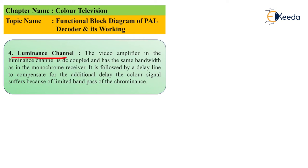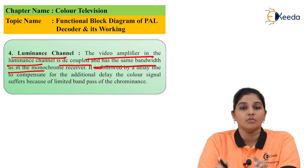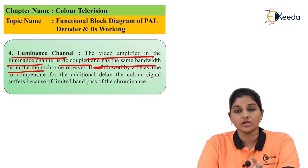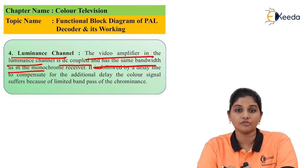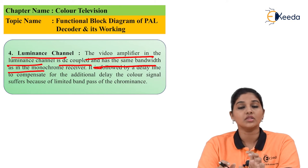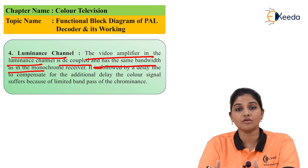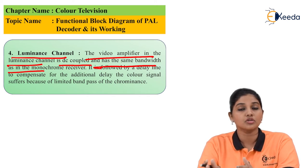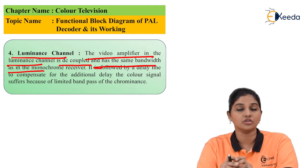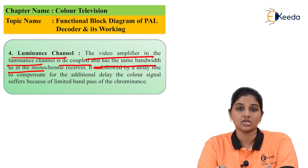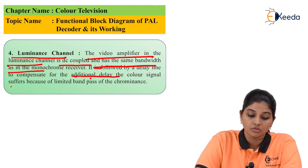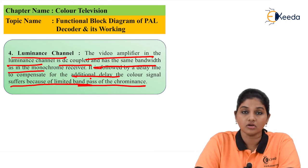The next block is the luminance channel. The video amplifier in the luminance channel is DC coupled and has the same bandwidth as used in a monochrome receiver. A delay line circuit is used in the luminance channel because during transmission in the encoder, three different signals are created: the luminance signal (Y signal) and two weighted difference signals (B-Y and G-Y). When these weighted signals are generated, the luminance signal suffers a relative delay. To compensate for this delay, a delay line is inserted in the luminance signal path. The delay line also helps limit the bandpass of the chrominance signal.